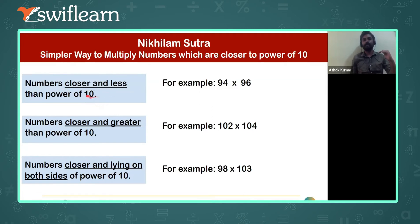Numbers closer and less than to the power of 10. So number closer and less than means it is 10, 100, 1000, 10,000 - I told you these are called as the power of 10, right? So that means 10, 100, 1000, 10,000, lakh, 10 lakh and it is going on continuously.